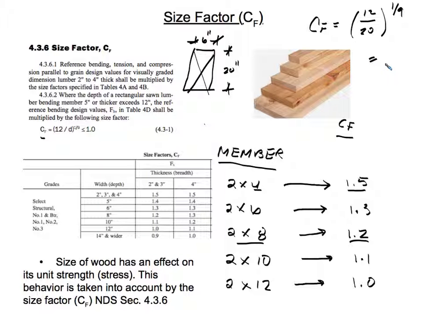If you plug that into your calculator, then you will get a result. I'm doing this on the fly, but if I take out my calculator: 12 divided by 20 gives me 0.6, and 0.6 to the one-ninth is going to give me 0.94, approximately 0.94.